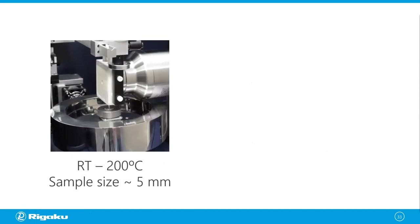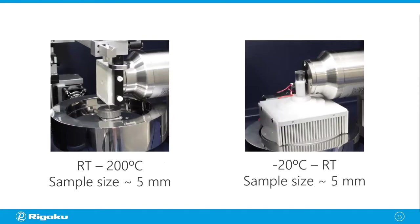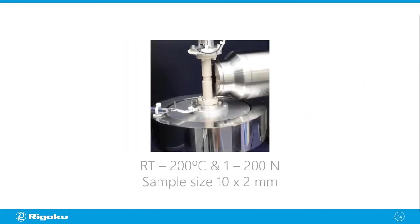Here are some off-the-shelf chambers. One is a heating chamber used on our Nano3DX CT scanner — it can heat the sample up to 200 degrees and accommodate a sample up to 5 mm in diameter. There is also a cooling version that can change the sample temperature from minus 20 degrees up to room temperature. Another stage can control temperature up to 200 degrees and simultaneously apply stress up to 200 Newtons — these are relatively compact in-situ chambers that combine well with high-resolution CT scanners.